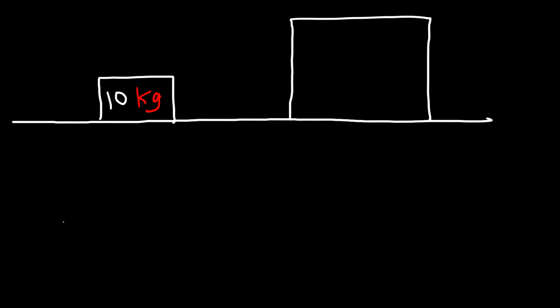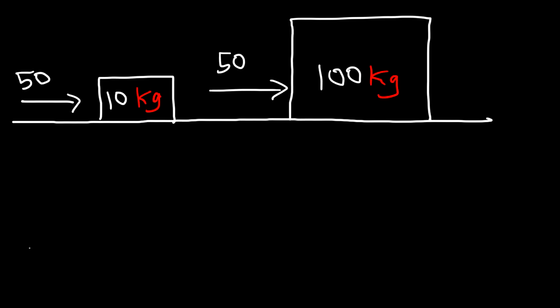Now, to illustrate the property of inertia, we're going to use two objects. The first object has a mass of 10 kilograms and the second object has a mass of 100 kilograms. In both cases we're going to apply a force of 50 newtons. So which object do you think has more inertia — the object with less mass or more mass? Intuitively you know it's the object with more mass. It's easier to move a lighter object but more difficult to move a heavier object because the heavier object has more inertia.